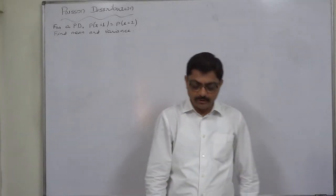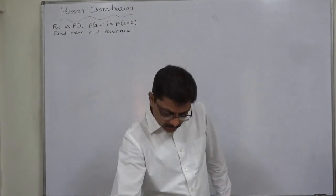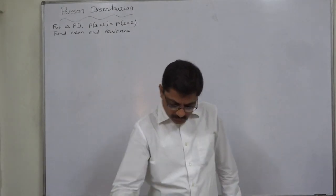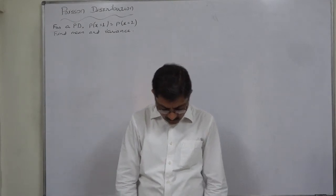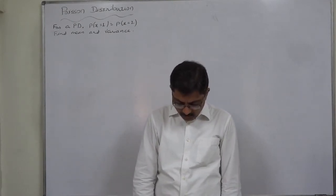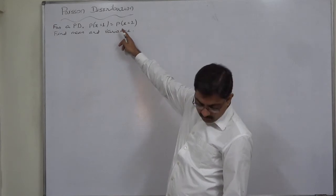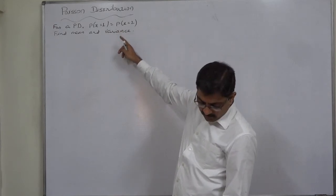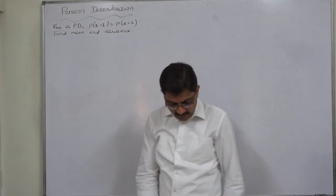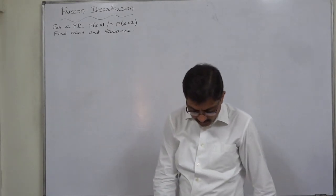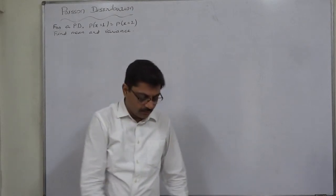The next case in Poisson distribution: if a random variable x follows Poisson distribution such that P(x=1) equals P(x=2), find the mean and variance of the distribution and also find P(0).